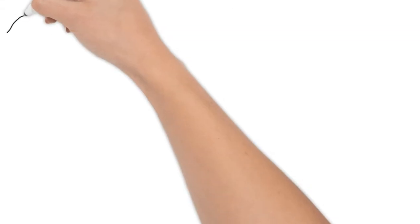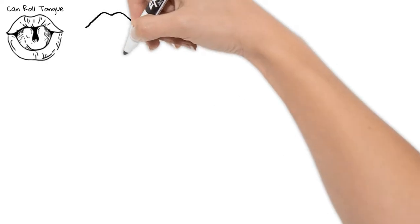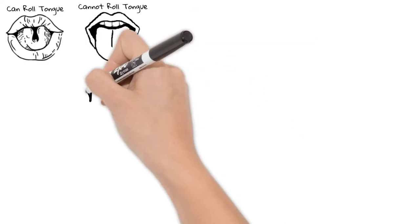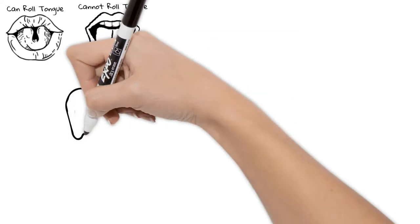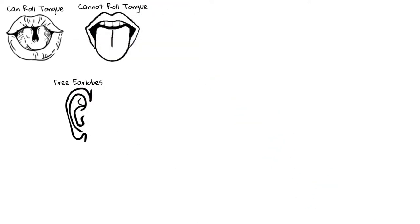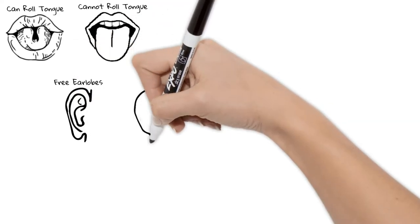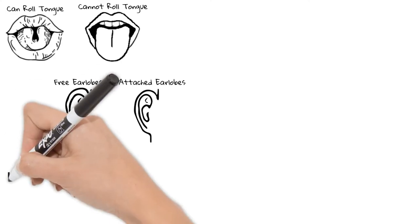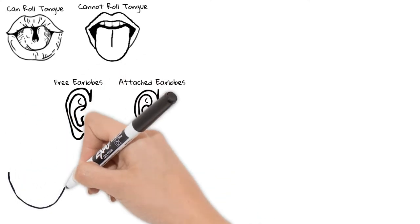Are you able to roll your tongue, or does it stay flat no matter how hard you try? Is there a gap between your earlobe and your head, or are your earlobes attached? Think of your front teeth and how they looked before braces — was there a gap between your front teeth?